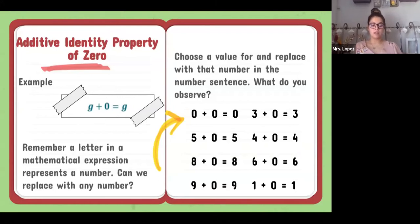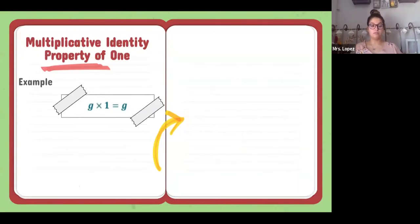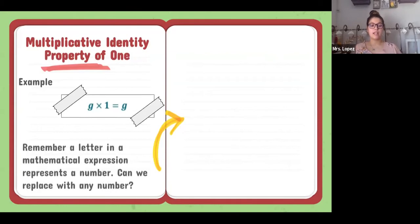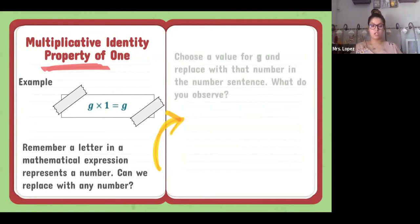Our next property is the multiplicative identity property of one. When G is multiplied times one, it equals G. A letter in a mathematical expression represents a number — so can we replace the letter G with any number? Yes. The value of G does not change when G is multiplied by one. Choose a value for G, replace that G with the number in the sentence, and see what you observe. Pause the video for two minutes to test it out.